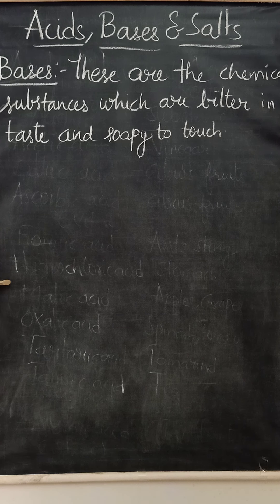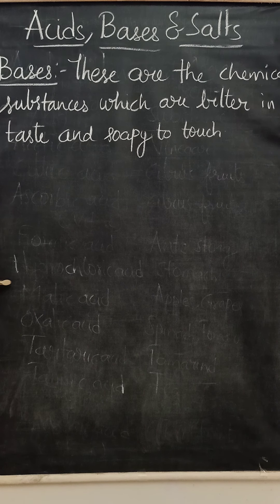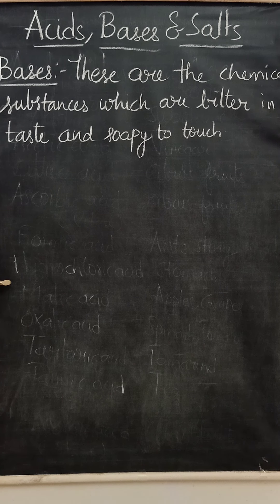Milk of magnesia - have you heard of it? It is used to combat acidity. If anyone is suffering from acidity, they are advised to have an antacid. That antacid contains a base called milk of magnesia, which is magnesium hydroxide. We also use baking soda, which is a common base in our daily life.